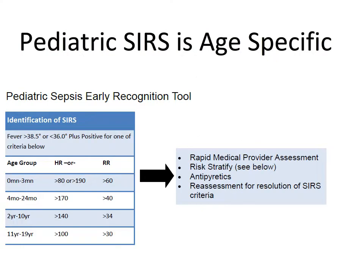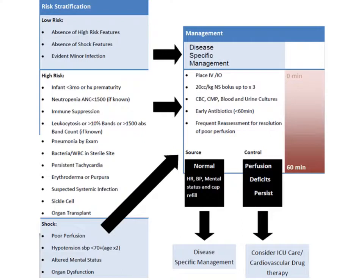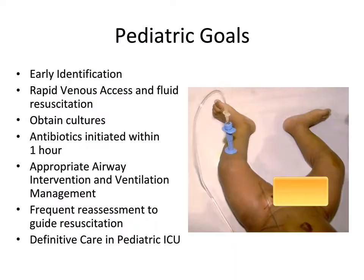In our pediatric sepsis power plan, we have developed a pediatric sepsis early recognition tool where identification of SIRS criteria is based on specific age group. Once high-risk patients are identified, specific management includes rapid access with either IV or IO therapy, fluid resuscitation, diagnostic studies including CBC, cultures, and lactate, and early antibiotics ideally within less than 60 minutes, with constant reassessment to evaluate for continued perfusion deficits. Shown here is a patient with a functioning intraosseous device — a reminder of the process: early identification, rapid access, obtain cultures, antibiotics within one hour, appropriate airway and ventilation management, and frequent reassessment to guide your resuscitation.